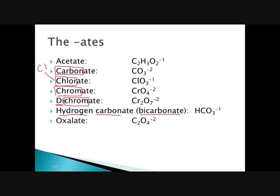Oxalate is C₂O₄ with a negative two charge. You can't get the formula from the name, but one student pointed out that the subscripts — 2, 4 — and the charge — 2 — add up to 8, and oxalate sounds like 'eight'. If that works for you, great. Permanganate has 'mangan' in it, which should make you think of manganese (Mn), so permanganate is MnO₄ with a negative one charge.